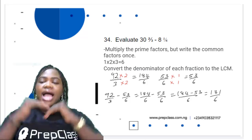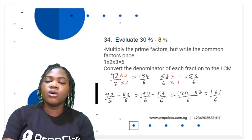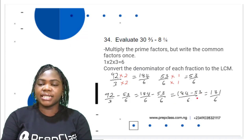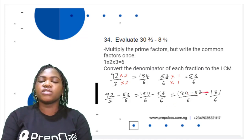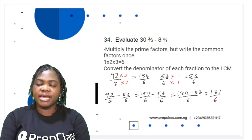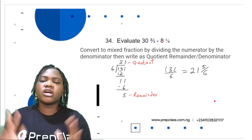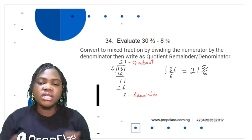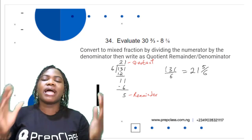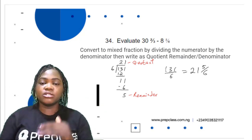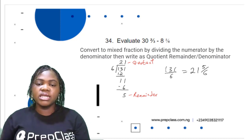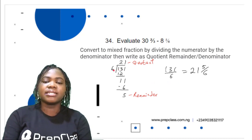Since they have the same denominator, subtract the numerators and divide by the common denominator: (184 − 53) ÷ 6 = 131 ÷ 6. We are not done — we need to convert back to a mixed fraction by dividing the numerator by the denominator and writing as quotient remainder over denominator.